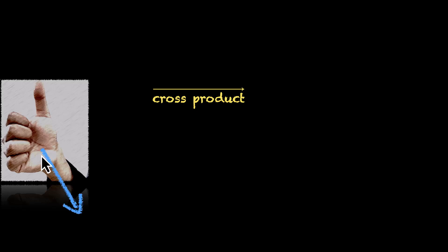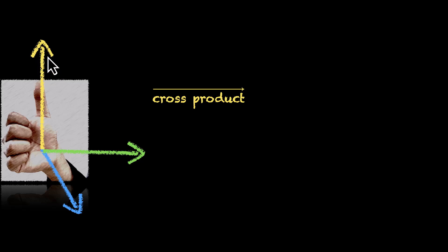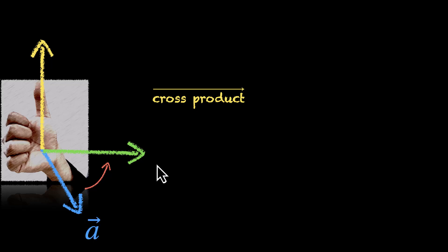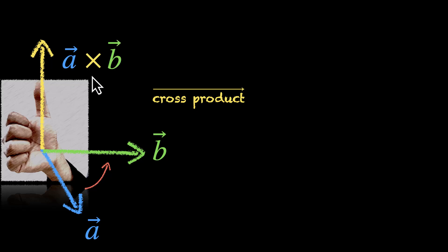For direction, we'll use our right hand. If we have two vectors — the blue vector and the green vector — and we want to find the direction of the cross product of these two, we can use our right hand to get the direction of the cross product, the yellow vector. If you're taking the product from blue to green, so if your fingers move from blue to green, your thumb will point towards the yellow vector, the cross product. If this is vector a and this is vector b, this yellow vector will be a cross b in the direction of the thumb.